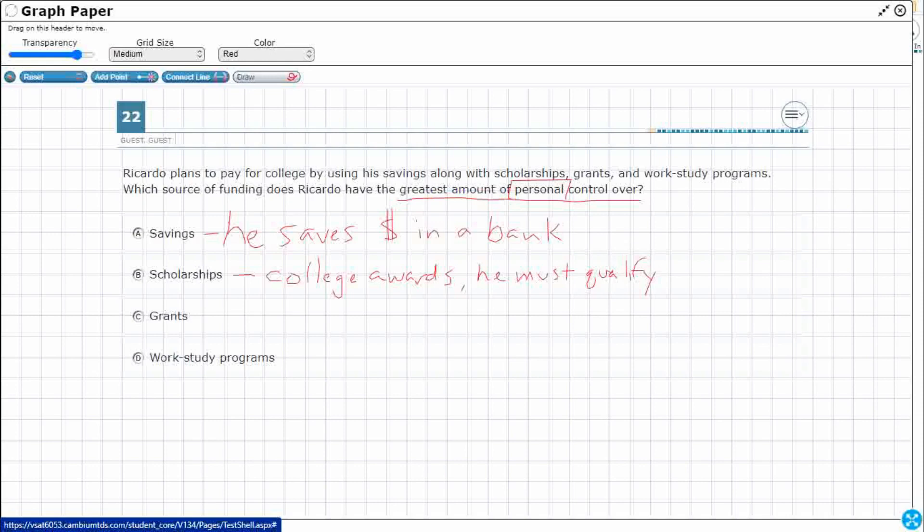It could be an athletic scholarship, could be a musical scholarship. So he has to try out and he has to be selected. But really, it's the college that awards most of this. And so even though he gets a little bit of saying whether or not he applies for it, qualifies for it, the decision really lands with the college. So I'm gonna say no on the scholarships because he's got more control right now over savings.